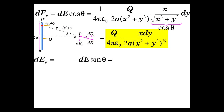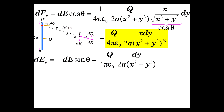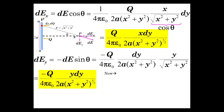Now let's consider the same thing in the y direction. The difference is we're going to have sine instead of cosine. The magnitude of dE is the same. This time we multiply by sine of theta, which is y over the square root of x squared plus y squared. So that's minus Q over 4 pi epsilon-zero times y dy over 2a times (x squared plus y squared) to the three-halves. The only difference between these is we have x in the x-component and y in the y-component.